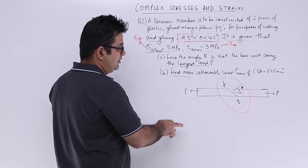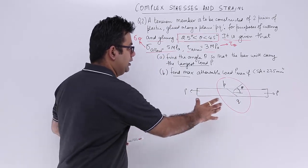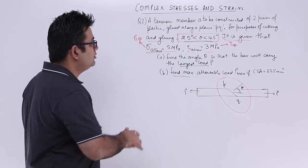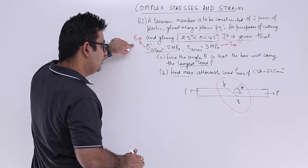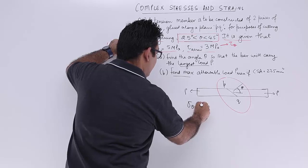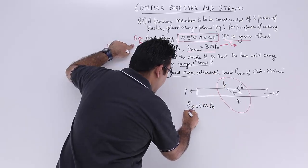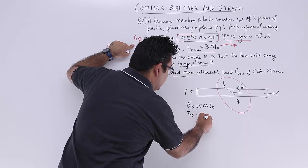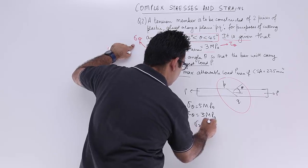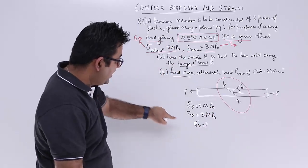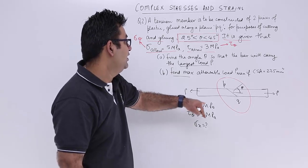This is the plane in question, this is theta. No need to worry too much about the figure. Just look at the data: sigma theta is 5 MPa and tau theta is 3 MPa. We don't know sigma x, so sigma x should be as large as possible to get the maximum load.